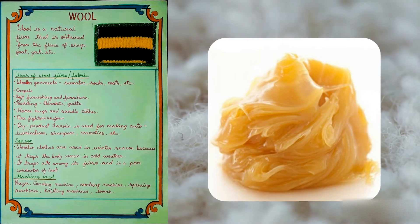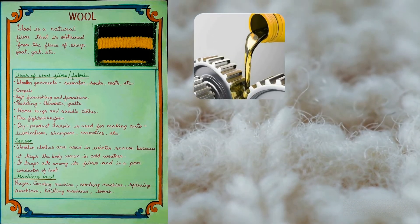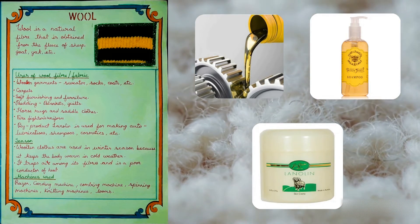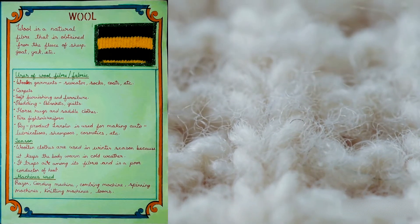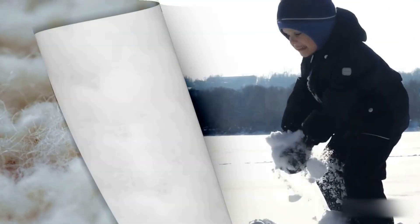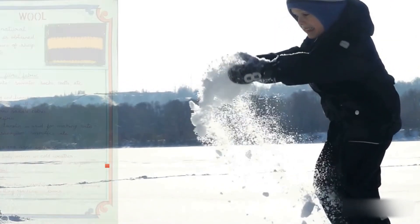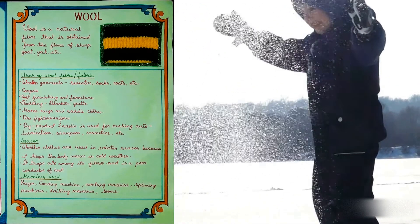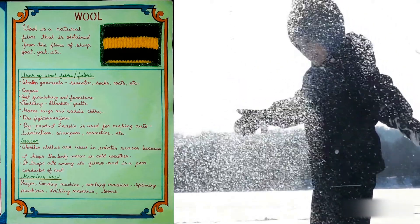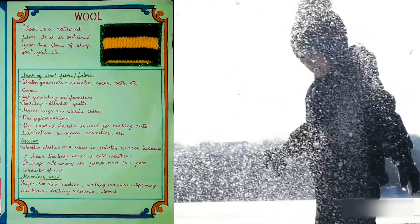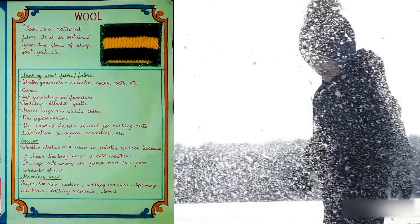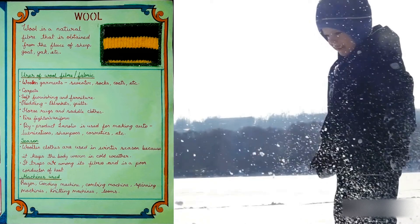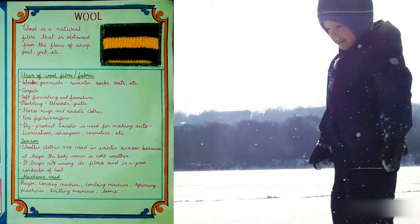The by-product lanoline is used for making auto lubricants, shampoos, cosmetics, etc. Woolen clothes are used in the winter season because it keeps our body warm in cold weather. It traps air among its fibers and is a poor conductor of heat.